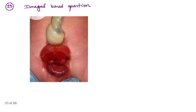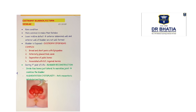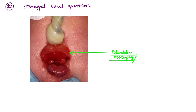Coming to question number 19, also an image-based question — this is bladder exstrophy, also known as ectopia vesicae. This is a rare congenital anomaly, more common in males than females. It is a lower midline defect where the anterior abdominal wall and anterior wall of the bladder are not well formed. Features include broad and short penis, anteriorly placed anal canal, separation of pubic bones, and bilateral inguinal hernia.